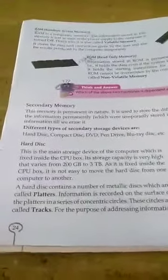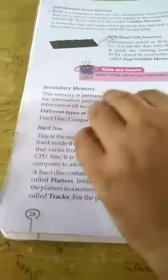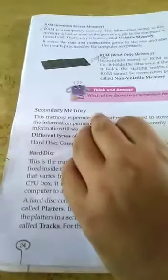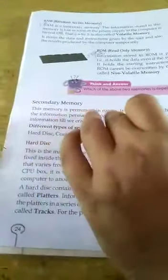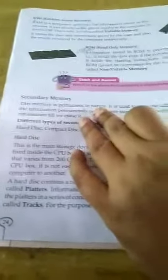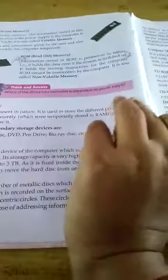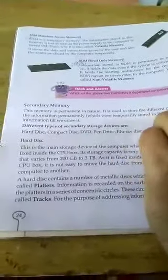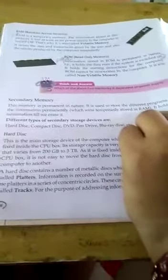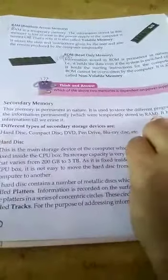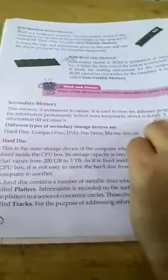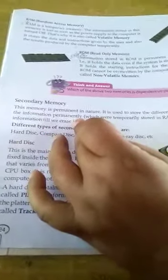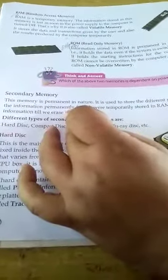Today I am going to teach the remaining part of Chapter 3 from Class 4, Secondary Memory. This memory is permanent in nature. It is used to store the different programs and information permanently which were temporarily stored in RAM. It holds the information till we erase it.